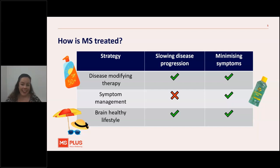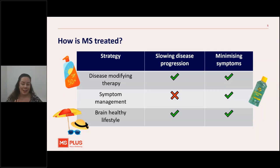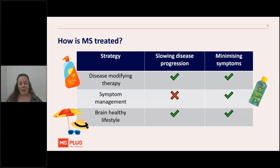Symptom management is like your aloe vera — it is going to make you feel better day to day. Symptom management includes taking pain medication for nerve pain, having a fatigue management plan, strategies to manage cognitive changes, or even changing your diet to manage continence changes. These are the things that are going to help you feel better day to day and minimise the impact of damage that's already happened.